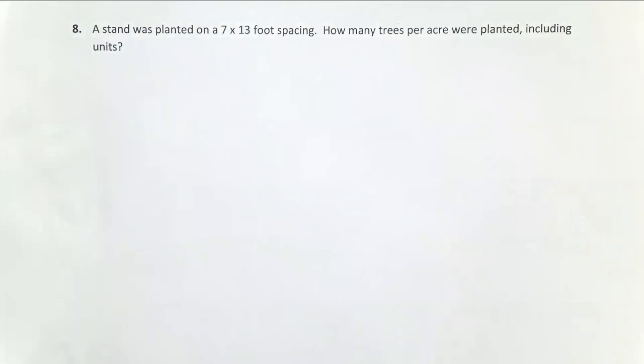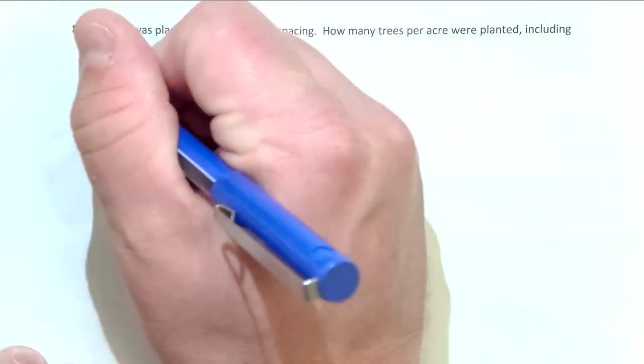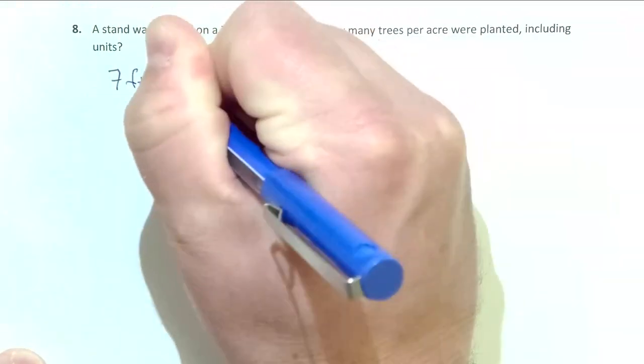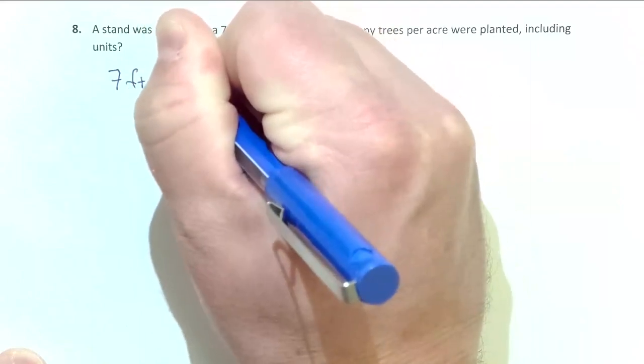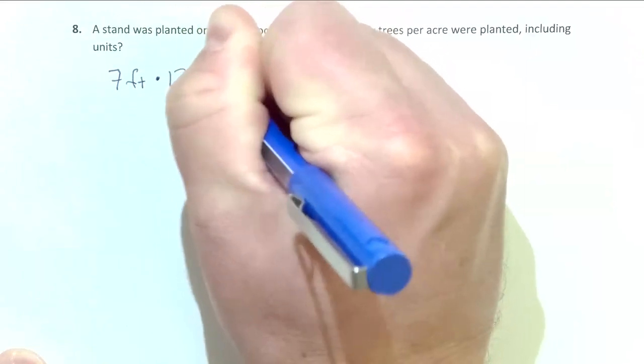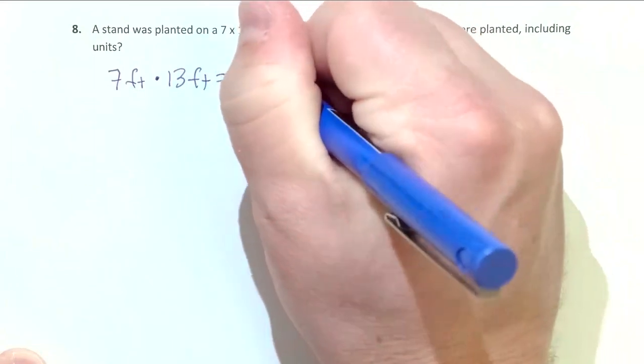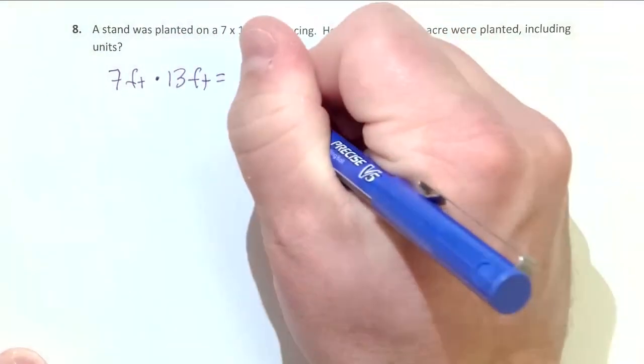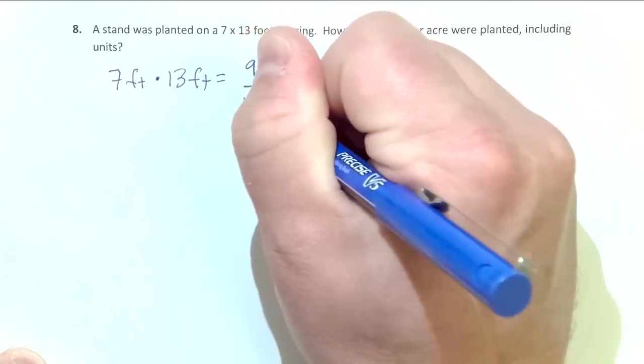Let me show you the long way and then the shorter way to do this. So first off, let's figure out how much growing space each tree gets, which is going to be 7 feet times 13 feet, which equals 91 feet squared. That's the growing space that one tree gets.